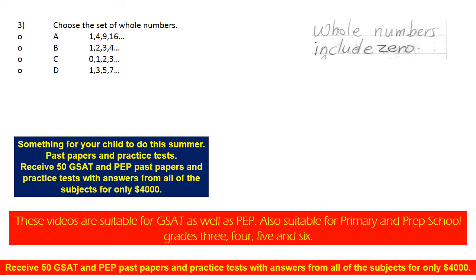Odd numbers continue: 19, 21, 23, 25, 27, 29, 31, and so on. When you divide odd numbers by 2, you have a remainder of 1 always. So D is the set of odd numbers. Therefore the answer is C: 0, 1, 2, 3, and so on. Those three dots mean you continue counting along the same line.